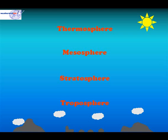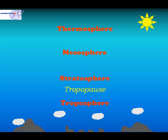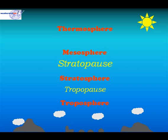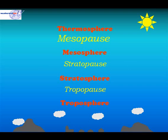Between each of these zones are clear demarcation areas. We call the area between the troposphere and the stratosphere the tropopause. Between the stratosphere and the mesosphere we find the stratopause. And between the mesosphere and the thermosphere we find the mesopause.